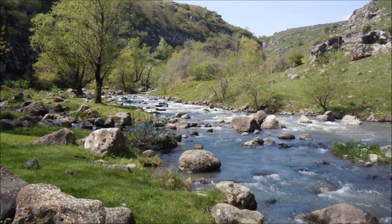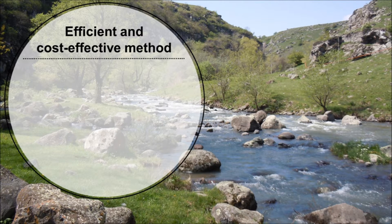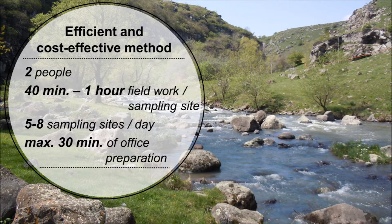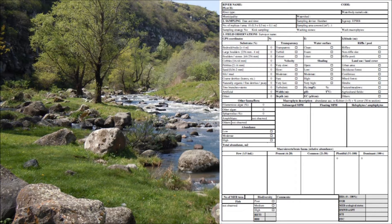The applied method used for an assessment must be efficient and cost effective. You should be able to provide an accurate assessment of the river's condition within a relatively short time period. The work should involve no more than two people and requires anywhere from 40 minutes to an hour of field work per sampling site, covering five to eight sample sites per working day depending on travel distances, and requires no more than 30 minutes of office preparation and data analysis.